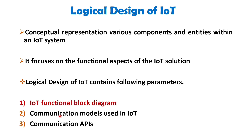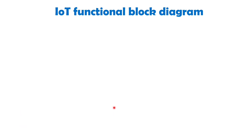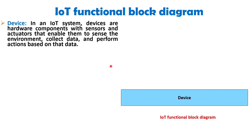Let's start with the functional block diagram of IoT. First is device. In an IoT system, devices are hardware components with sensors and actuators that enable them to sense the environment, collect data, and perform actions based on that data. For example, IoT devices could include temperature sensors that measure environmental temperature, smart thermostats that control heating and cooling systems, or industrial sensors that monitor machinery health to optimize maintenance schedules.